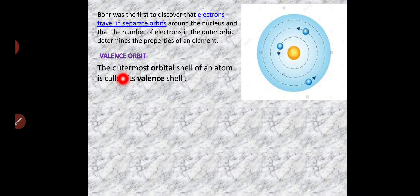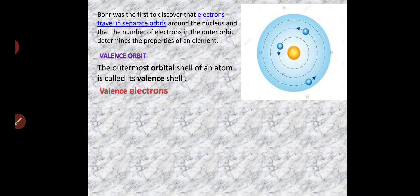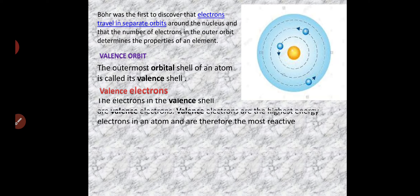How do we define the valence orbit? The outermost orbital shell of an atom is called the valence shell — this orbit is also called a shell. The electrons which are rotating in this last orbit are called valence electrons. The electrons in the valence shell are valence electrons.